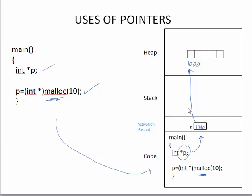Heap memory is not directly accessible, but it is indirectly accessible by the program through a pointer. This is the first usage of pointers — accessing heap memory.